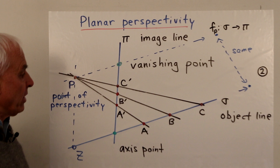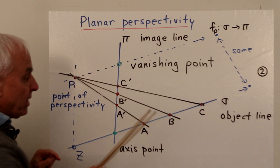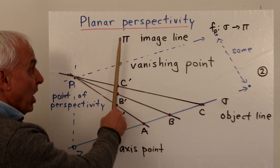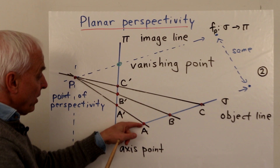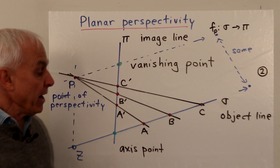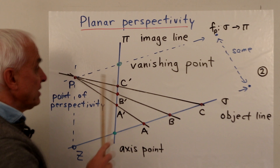We're going to be looking especially at perspective and some important ideas concerned with that. A good place to start is with the planar situation, where we're working in two dimensions and thinking about the perspective from a fixed point P between one line — the object line sigma — and another line — the image line pi. So A corresponds to A', B corresponds to B', and C corresponds to C'.